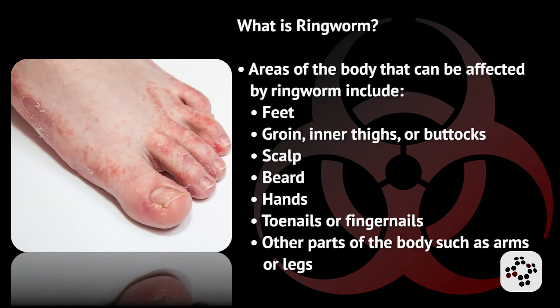The areas of the body that can be affected by ringworm include the feet, groin, inner thighs or buttocks, scalp, beard, hands, toenails and fingernails, and other parts of the body such as the arms or legs.